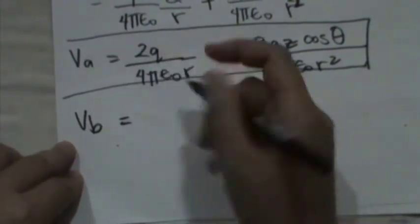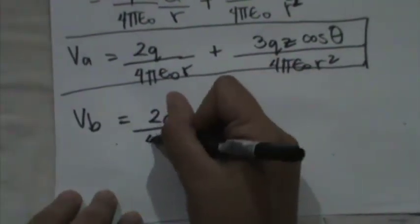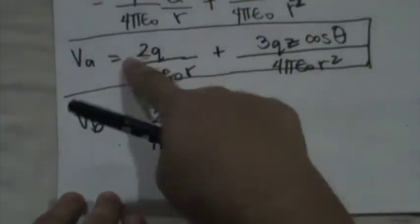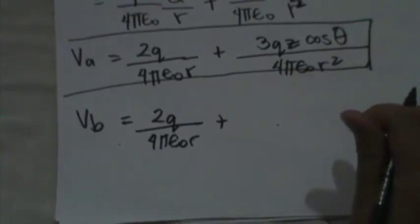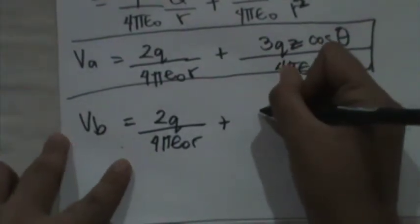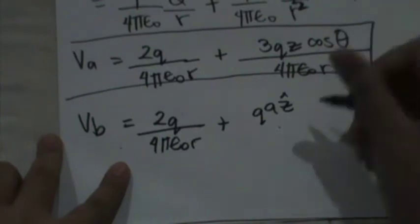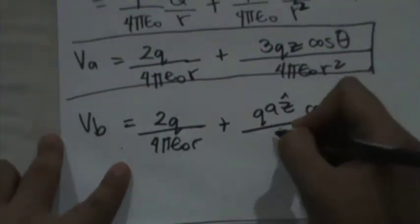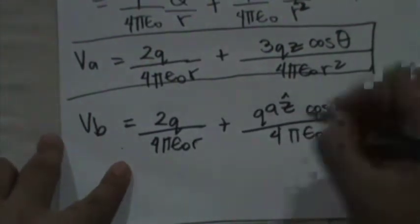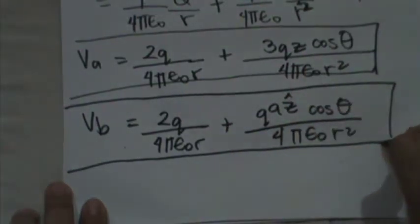For arrangement B, the monopole is again 2Q, giving 2Q over 4πε₀R. The dipole moment is QA ẑ, and with R̂ giving the cosine theta factor, the dipole term is QA cosine θ over 4πε₀R². So the potential for arrangement B is 2Q over 4πε₀R plus QA cosine θ over 4πε₀R².